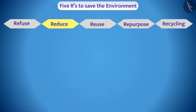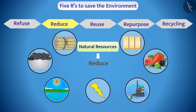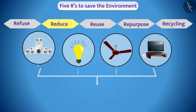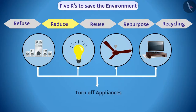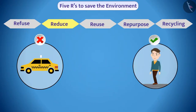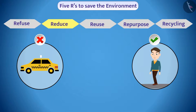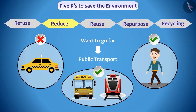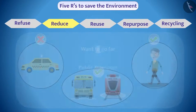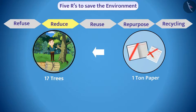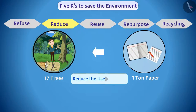Reduce. We should reduce the use of resources. For example, we can turn off appliances running on electricity when not in use. You can take a walk to go to nearby places instead of using a car. If you want to go far, you can use public transport. This will save petroleum. Did you know that 17 trees are cut to produce 1 ton of paper? We can reduce the use of paper so trees can be saved.